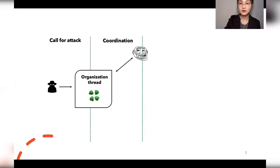He asks other members of the community to participate in the coordinated attack. Phase two: coordination. The organization thread created by Charlie becomes an aggregation point for the attackers, who report additional information and coordinate the attack by replying to the thread — for example, posting a password to access the meeting or personal information about the host.